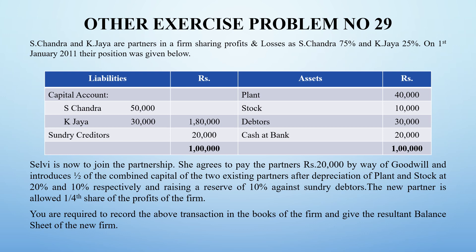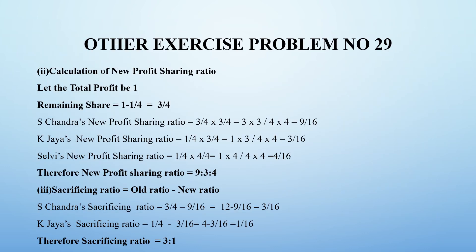Here we find the new partner's capital - this is one important step in these problems, referred to as 'adjusted capital.' The new partner is allowed one-fourth share of profit of the firm. She is given that one-fourth share. With this, we need to prepare the revaluation account, capital account, and balance sheet. Let's see how to prepare them. Before entering the problem, we need to find the new profit sharing ratio and sacrificing ratio.